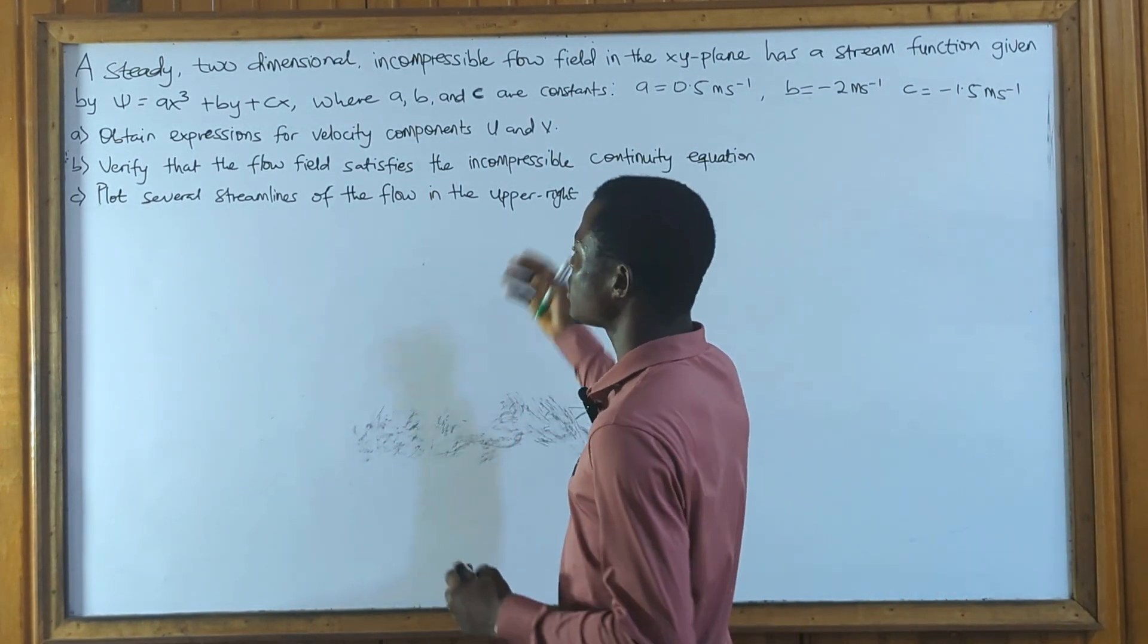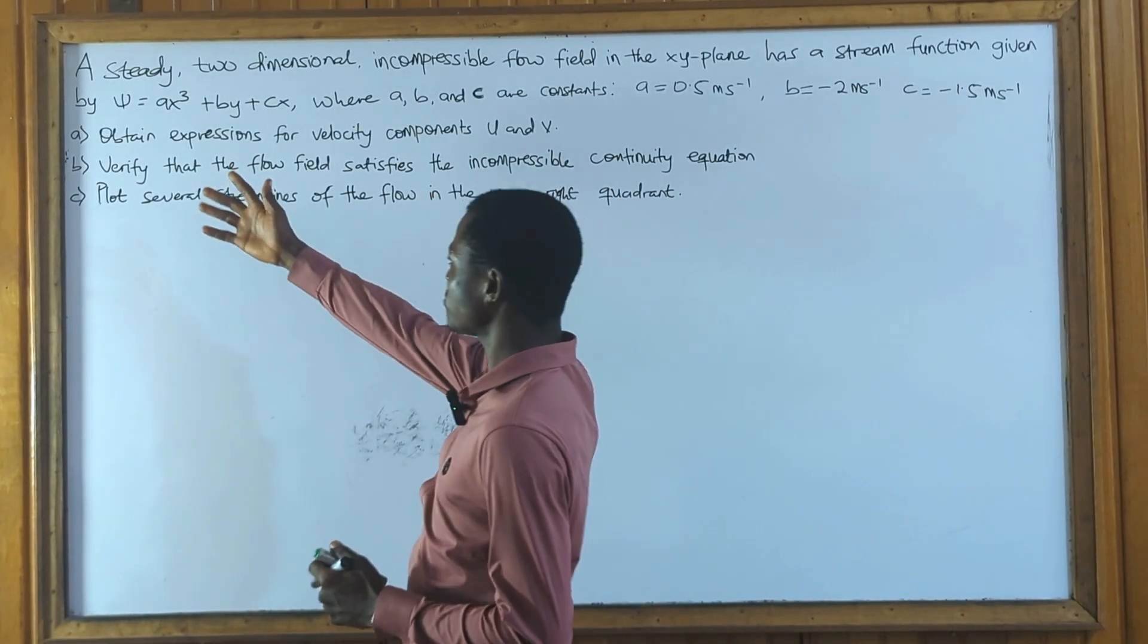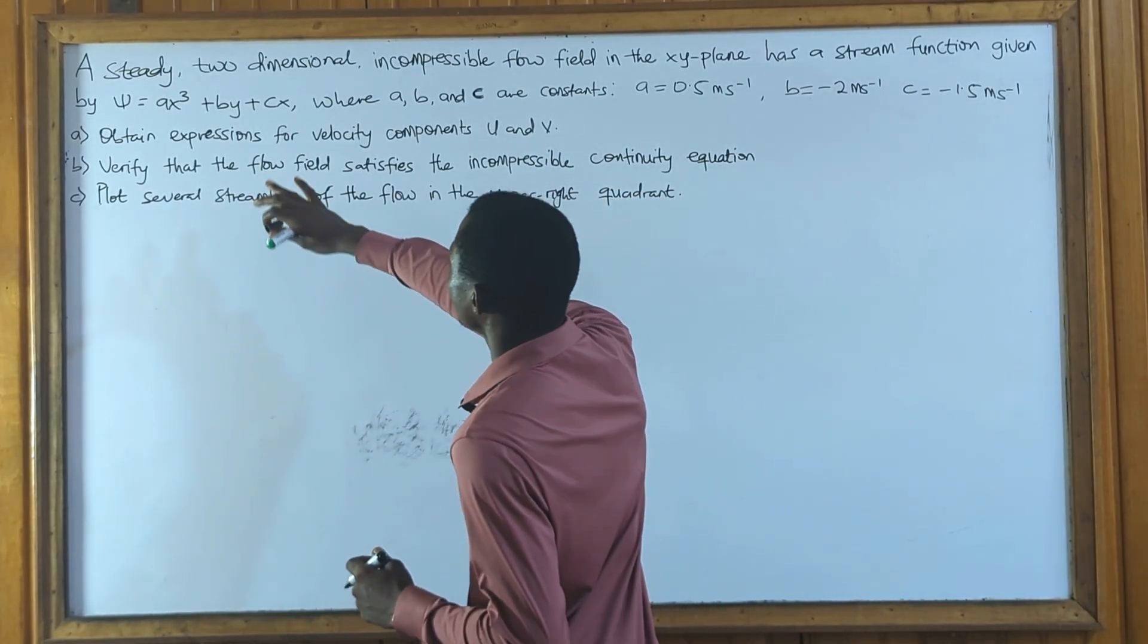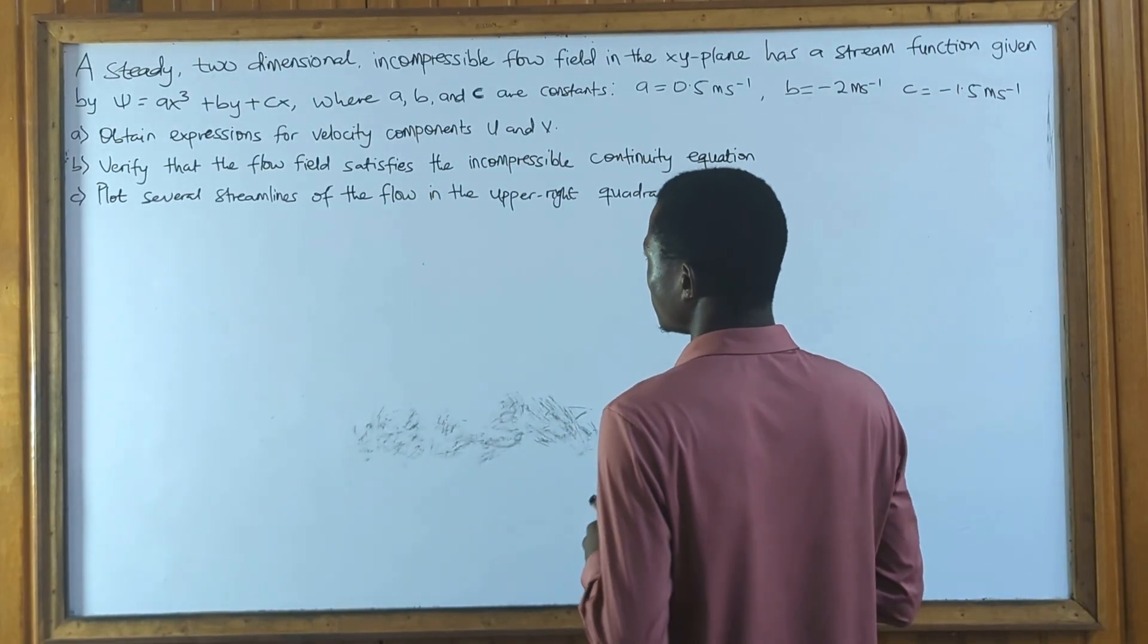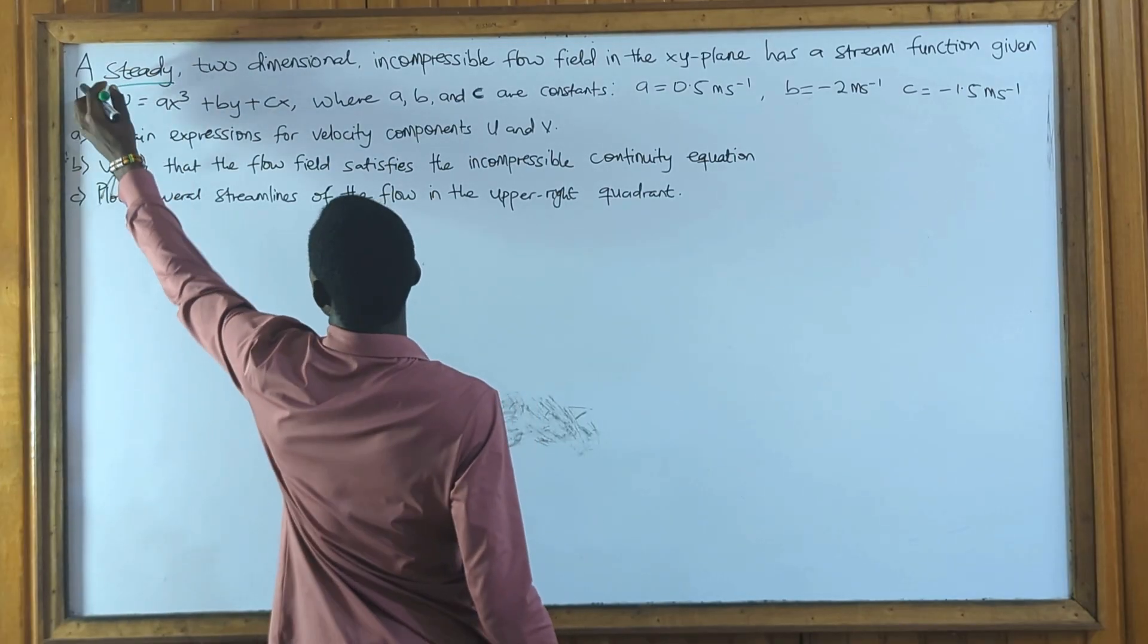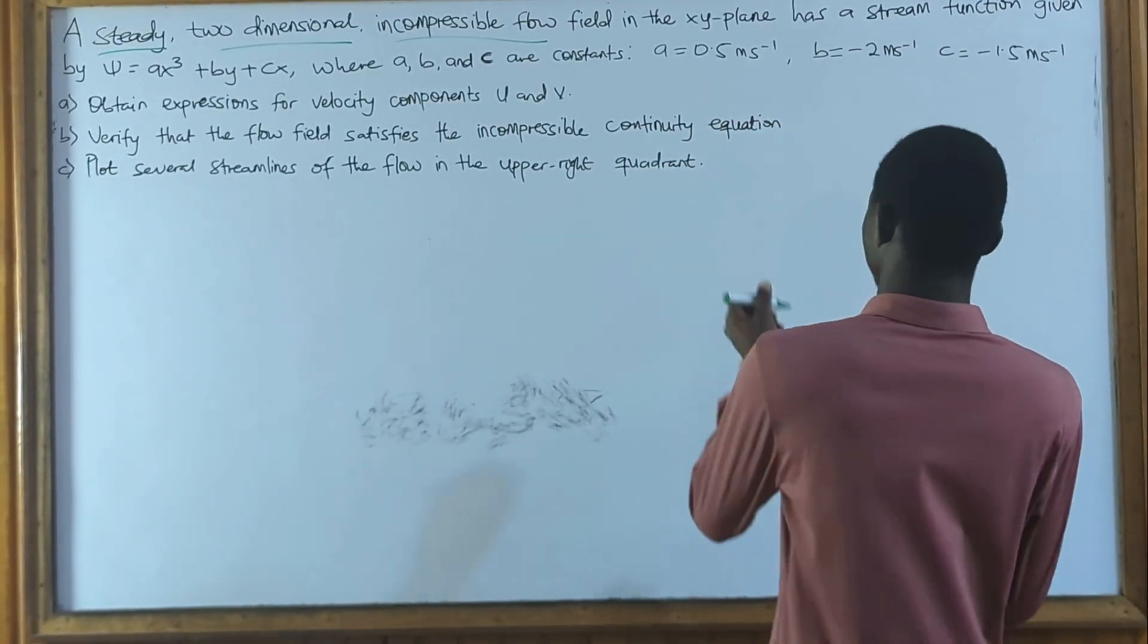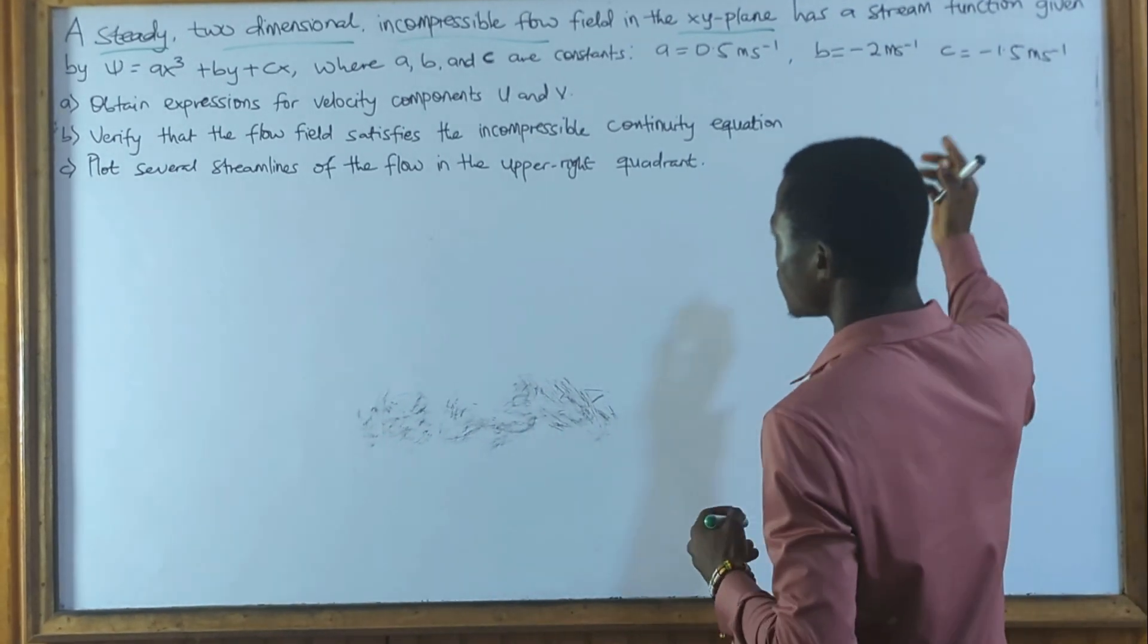So this is the question, and we are to find these three elements that we have here. So how are we going to go about it? Let's start with the first one. We are to obtain velocity components u and v. We are given these three conditions: steady, two-dimensional, and also compressible flow field in the xy-plane. So this is our plane. It means the z-plane is also 0.